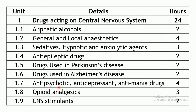The next chapter is anti-psychotic drugs, anti-depressants, and anti-mania drugs. Anti-psychotics include phenothiazines, butyrophenones, and atypical anti-psychotic drugs commonly used for schizophrenia. Anti-depressants are used in depression, and mania is a condition opposite to depression with irritable behavior. Three hours are allotted for these chapters.